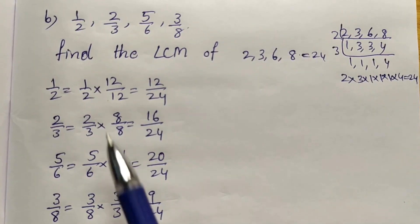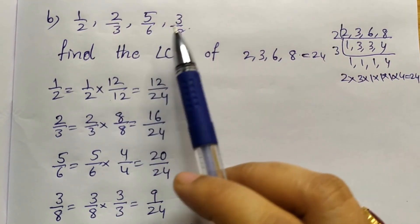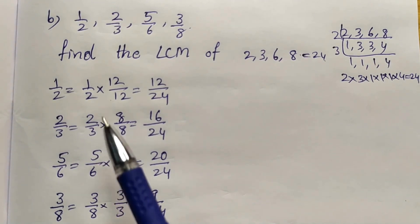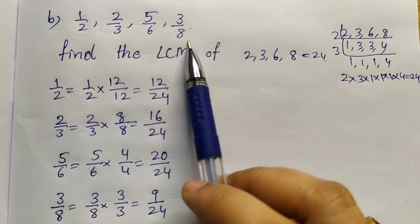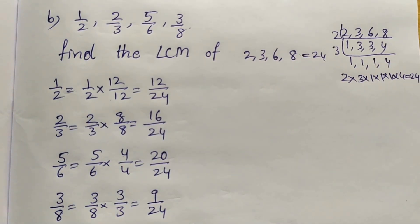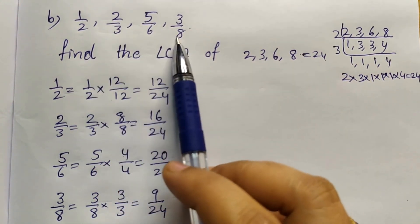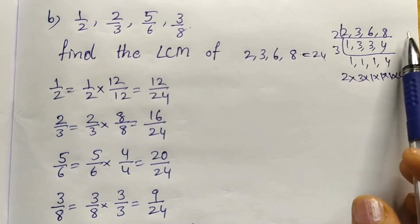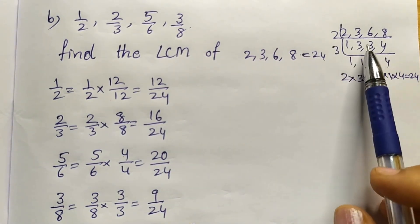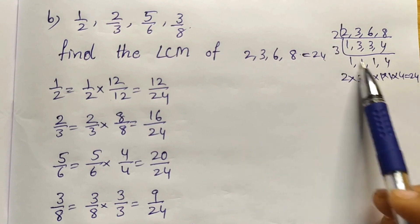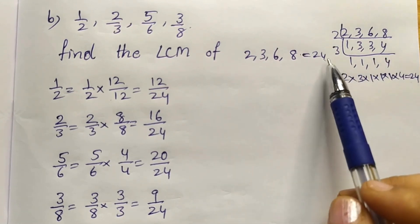Here we have one more problem: 1 by 2, 2 by 3, 5 by 6, and 3 by 8. We have to write these fractions in ascending and descending order. We have different numerators and different denominators. In such cases we have to find the LCM and write the equivalent fractions, then compare. Find the LCM of the denominators 2, 3, 6, and 8 — the LCM is 24.